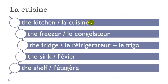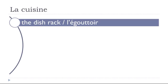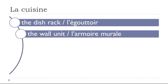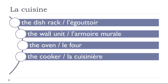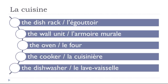La cuisine. Le congélateur (freezer). Le réfrigérateur (refrigerator). Le frigo (fridge). L'évier (sink). L'étagère (shelf). L'égouttoir (dish rack). L'armoire murale (wall cabinet). Le four (oven). La cuisinière (stove/cooker). Le lave-vaisselle (dishwasher).